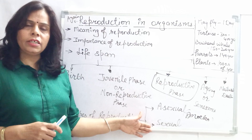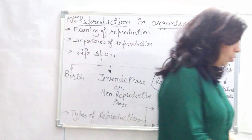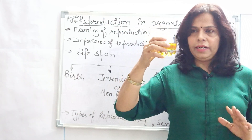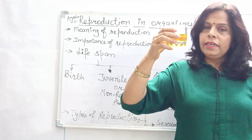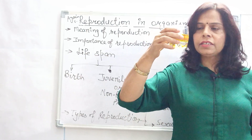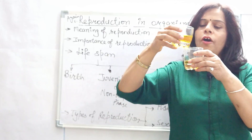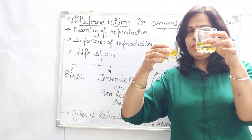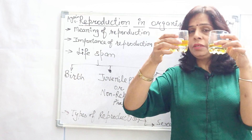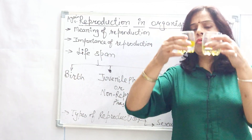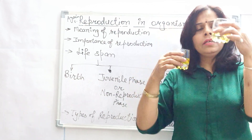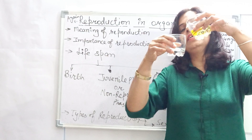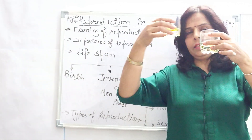To show the concept of asexual and sexual reproduction, let me demonstrate with a small experiment. Here is one parent with its genetic material. In asexual reproduction, this parent simply transfers its genetic material to the offspring. So the offspring has exactly the same genetic material as the parent — no change. This baby will grow and transfer its genetic material to another baby, and so on.